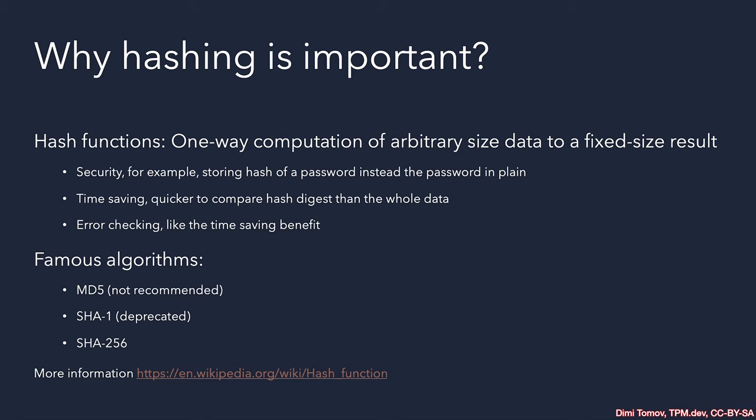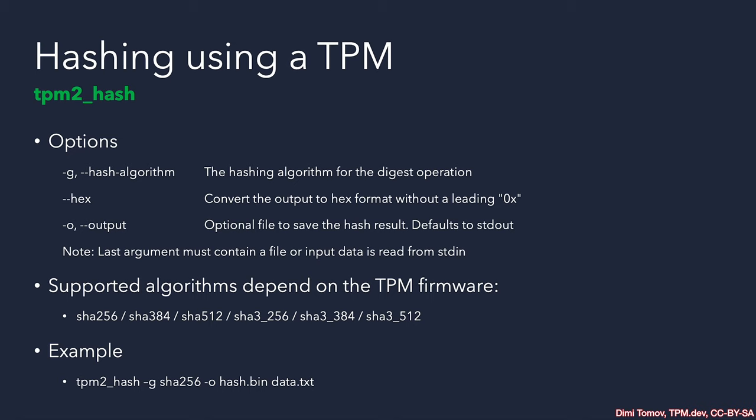Hashing is the one-way computation of any size of data to a fixed size result. This is particularly useful for security purposes when we want to obfuscate a secret or text, usually a password. This is also available on Linux systems using the shadow file in the /etc folder. Because hashing is so useful, you have probably already heard about algorithms such as MD5 and SHA-1. Unfortunately, both of these algorithms are not good for security purposes nowadays, and we often use SHA-256. The TPM supports these hash versions, but TPMs have a minimum set of functionalities, like SHA-256, while everything else is more or less optional.